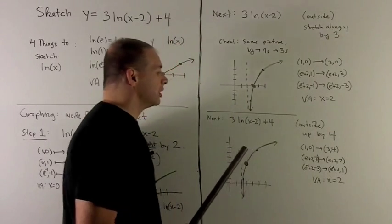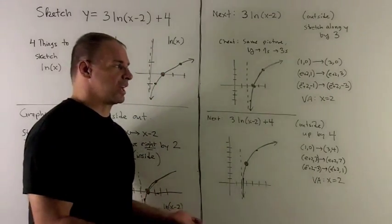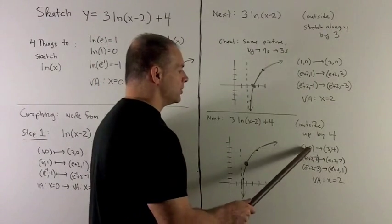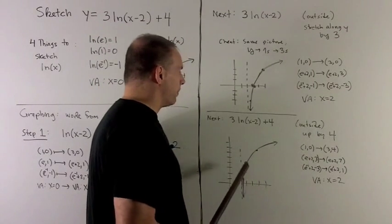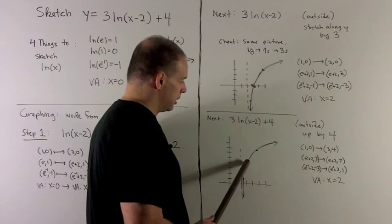For our final operation, we're just going to add 4, and that does exactly what you would think. We just raise the whole entire graph by 4. So 1, 0 goes to 3, 4. So our black dot at 3, 0, just going to go up to here.